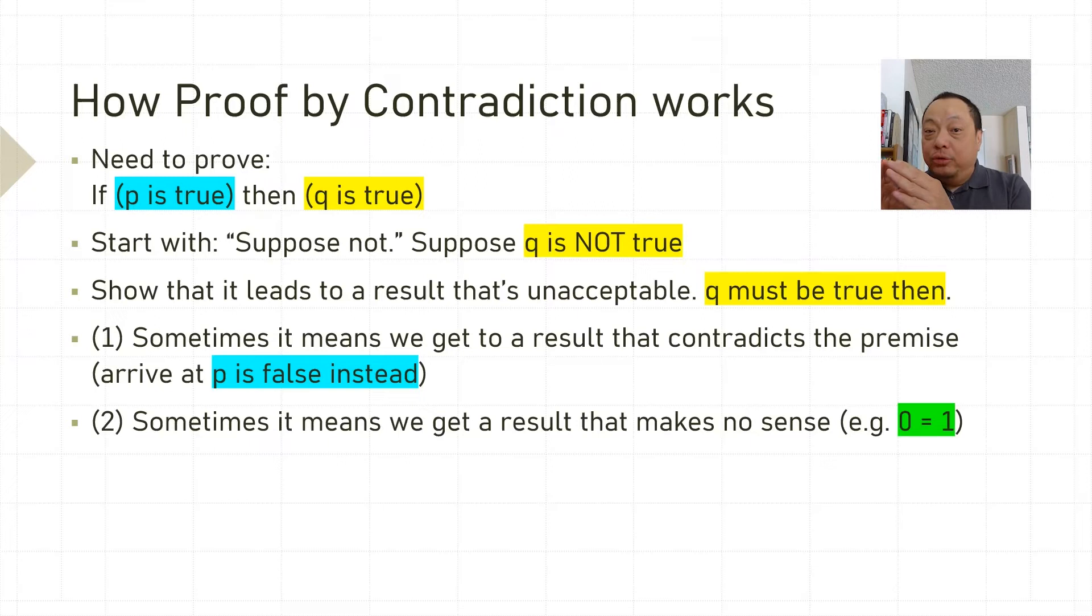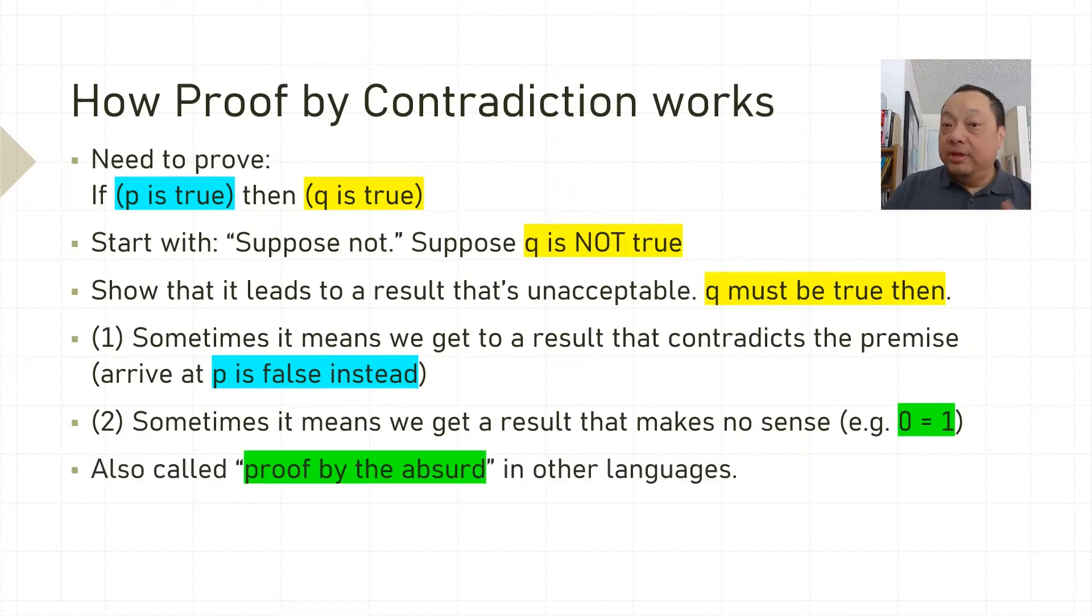Sometimes we don't get back to the premise but rather we manage to move on to something else that's total nonsense. For example, we arrive at 0 equals 1. That's also unacceptable and it also shows that the supposed not part must have been wrong and therefore Q must be true. For this reason, this method of proof is also called proof by the absurd in other languages such as Latin or Spanish or French.